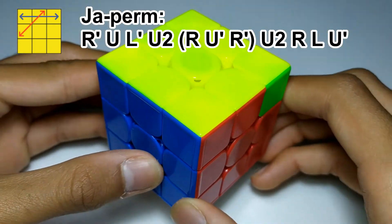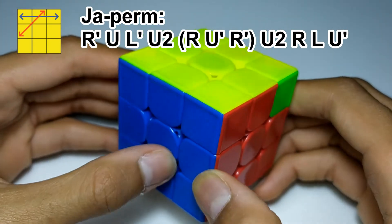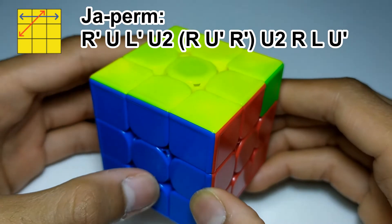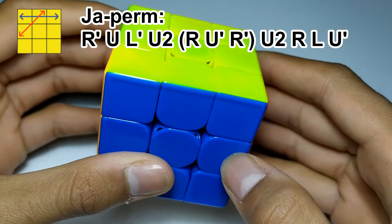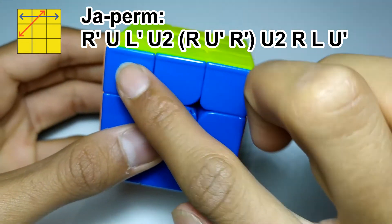And the second algorithm is the JA-perm. This algorithm looks quite hard to learn, as you can see. So, I'm going to visualise it in terms of F2L pairs. So, we start by holding the headlamps, or in this case the big block, at the front.